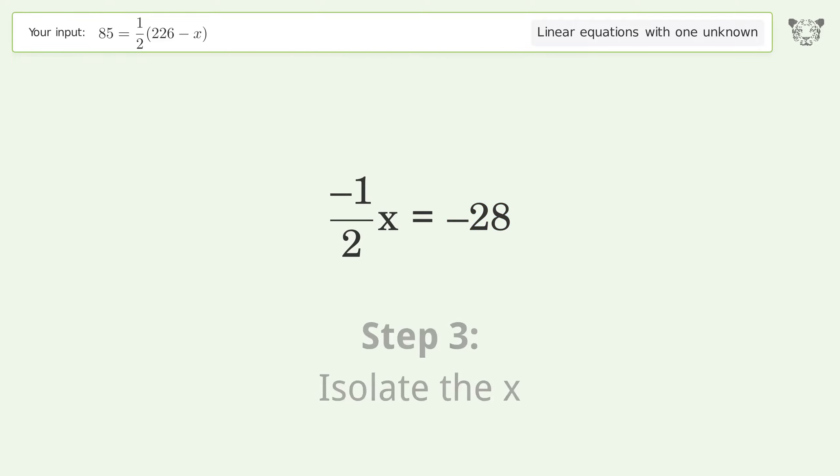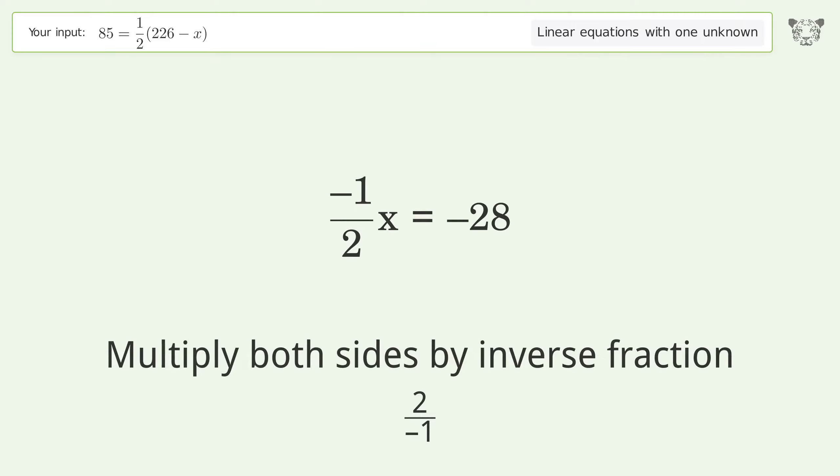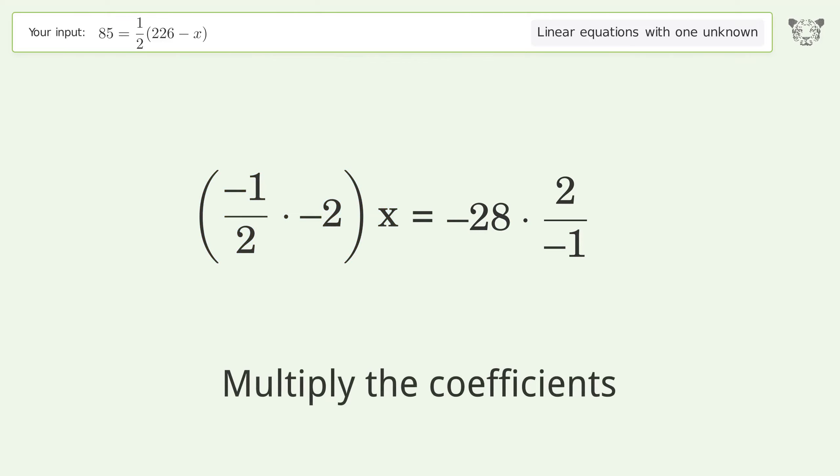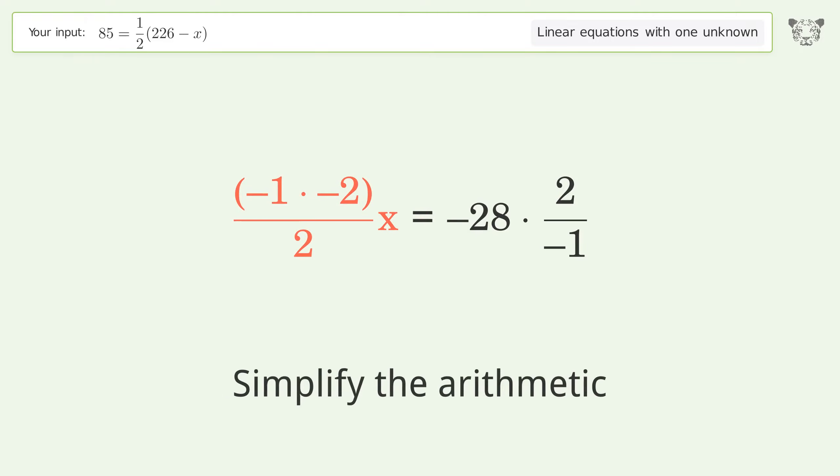Isolate the x. Multiply both sides by the inverse fraction 2 over negative 1. Group like terms. Multiply the coefficients. Simplify the arithmetic.